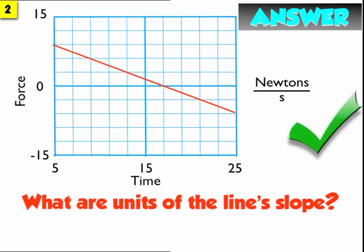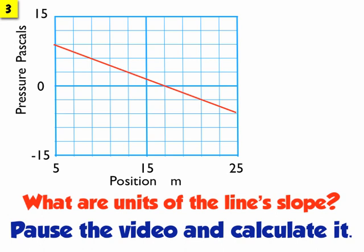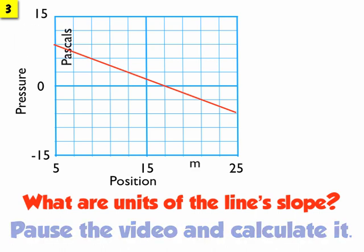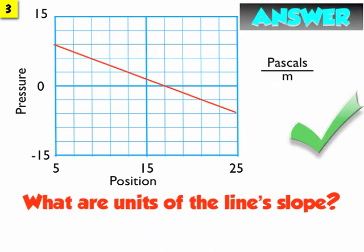Third question: what are the units of the line's slope? Pause the video. At this point you should have found the calculation — the units of the slope are units of the rise divided by units of the run, so it's pascals over a meter.